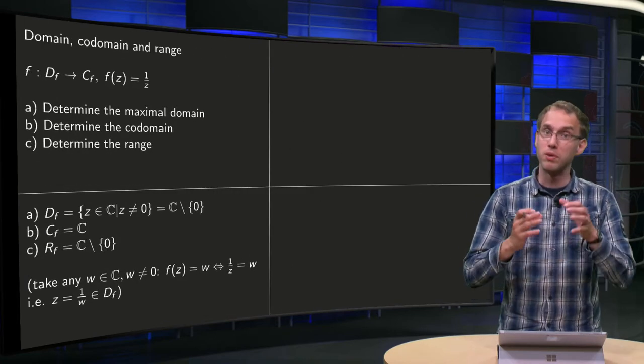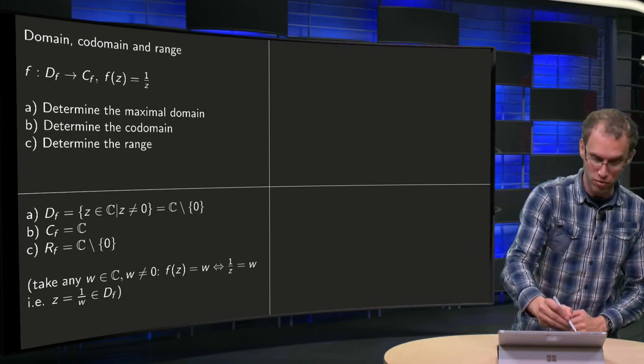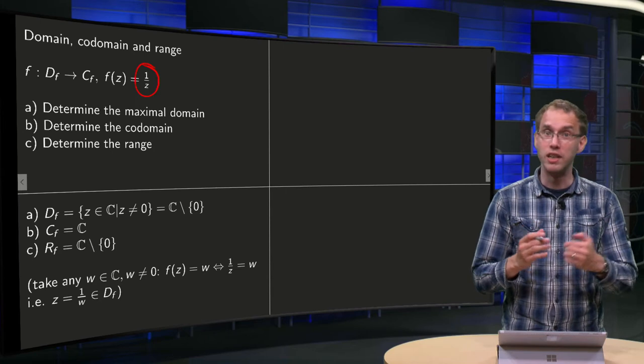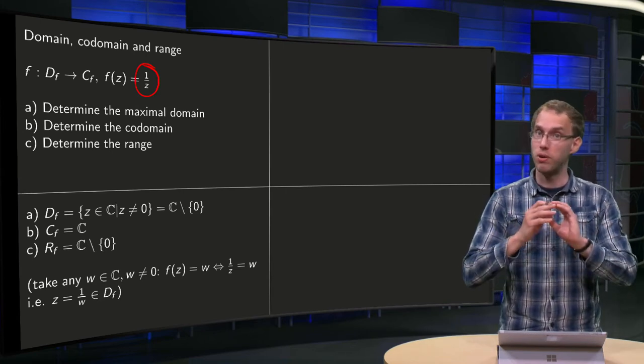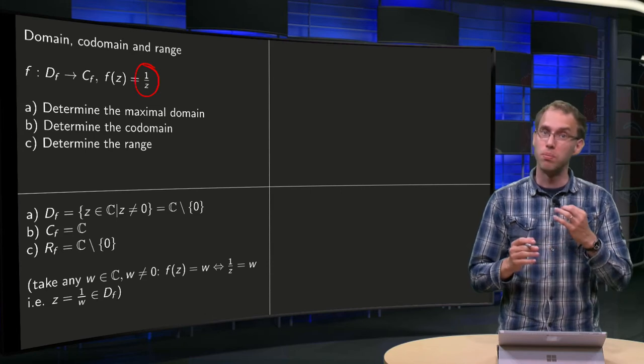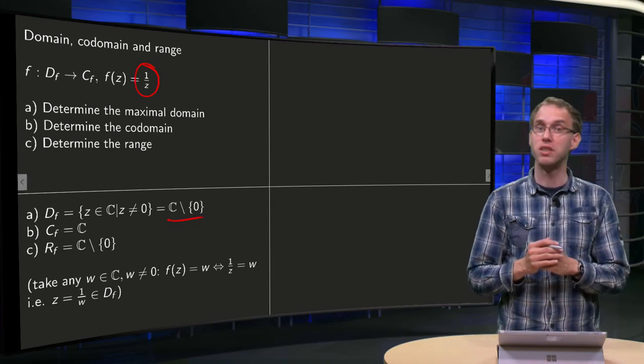So first about the domain, what is the maximal domain which we can choose? Well, you have f(z) equals 1 over z, so obviously you cannot plug in z equals 0, but apart from 0 you can plug in any number z, so the maximal domain is the set C without 0.